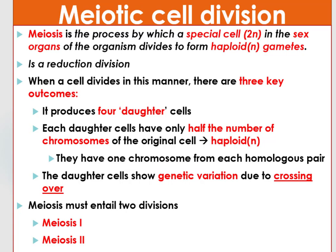Meiotic cell division produces four different daughter cells, which are haploid gamete cells used to pass on genetic information from parent to offspring. Meiosis is the process by which a special cell in the sex organs of the organism divides to form haploid gamete cells. Meiotic cell division is a reduction division because it produces four daughter cells that have half the number of chromosomes of parental cells.